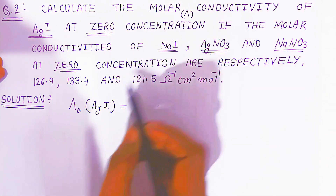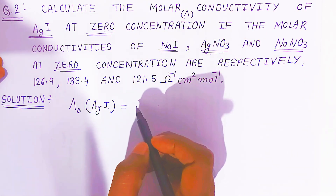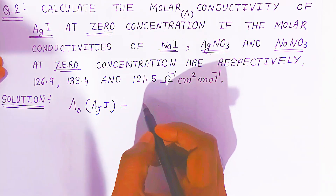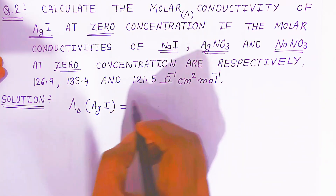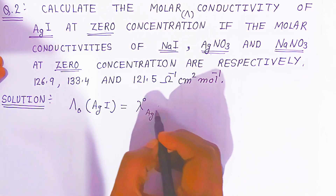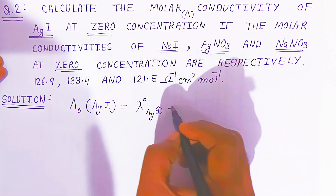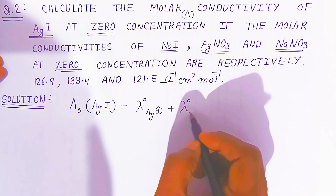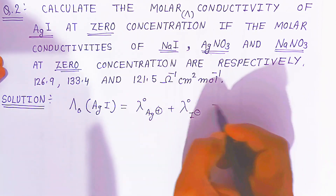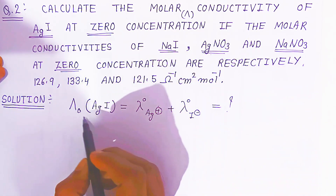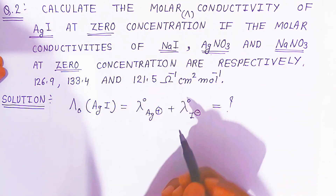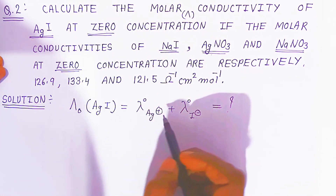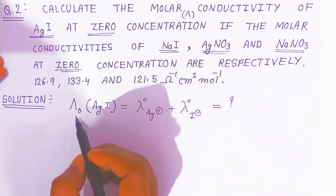To find the molar conductivity, you should know the ionic conductivity at zero concentration. For silver iodide, you need the ionic conductivity at zero concentration of silver-plus and iodide ions. If you know the ionic conductivity of silver-plus and iodide at zero concentration, you can find out the molar conductivity of silver iodide.